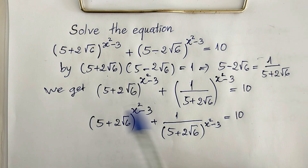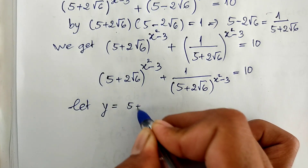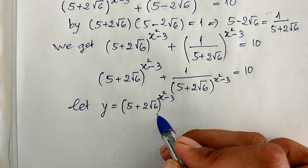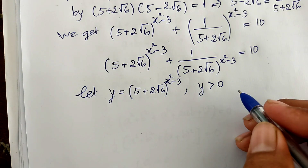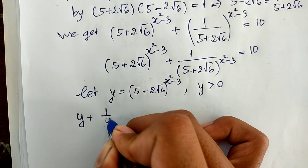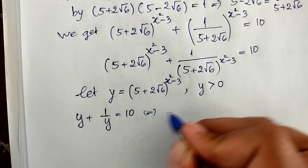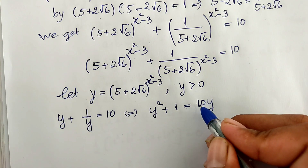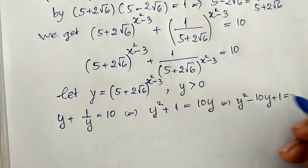To solve this, we substitute the repeated part with another variable. Let y = (5 + 2√6)^(x² - 3). Note that since this is an exponential function, y is positive. So we get the equation y + 1/y = 10. Multiplying both sides by y, we get y² + 1 = 10y, or y² - 10y + 1 = 0.